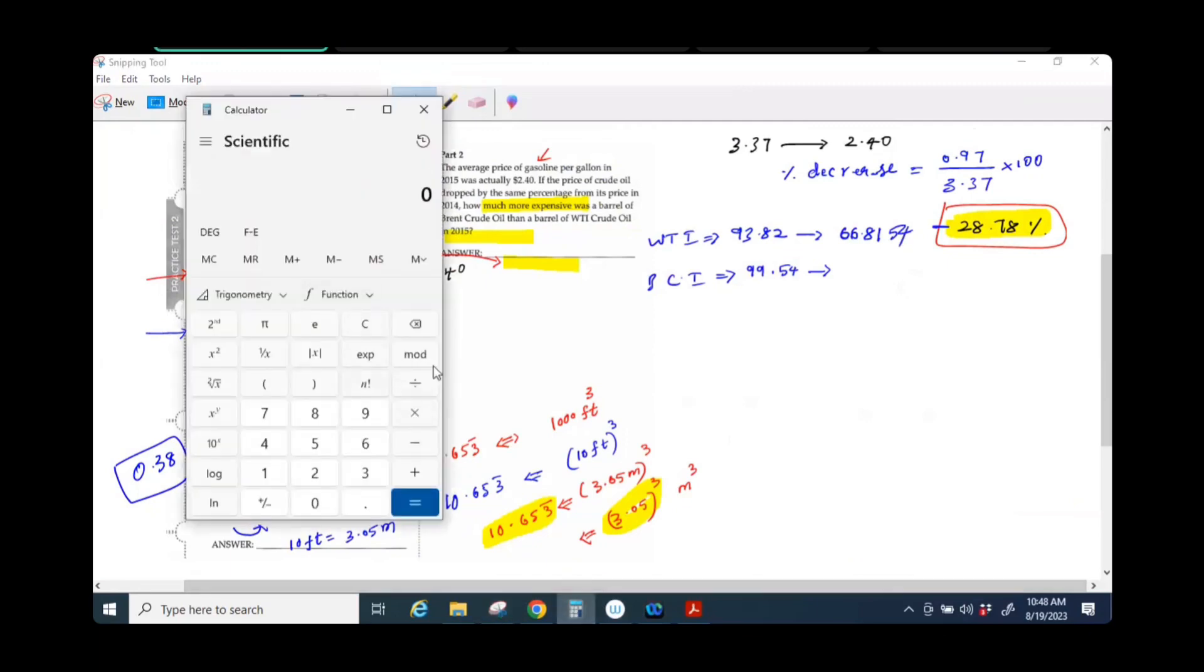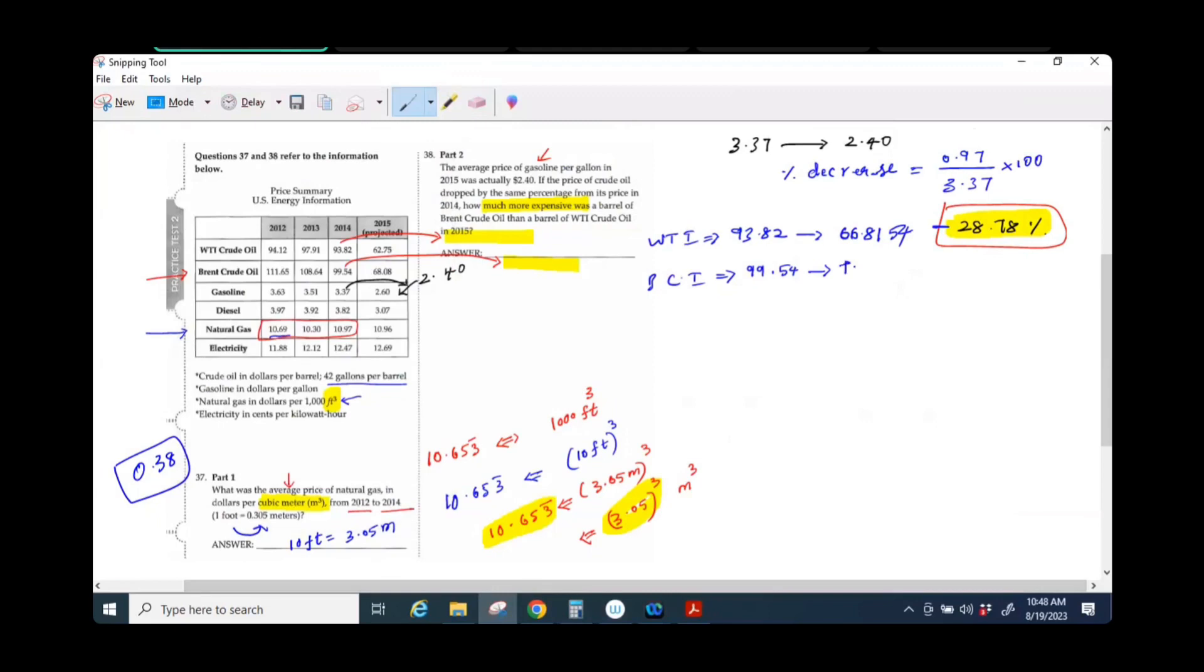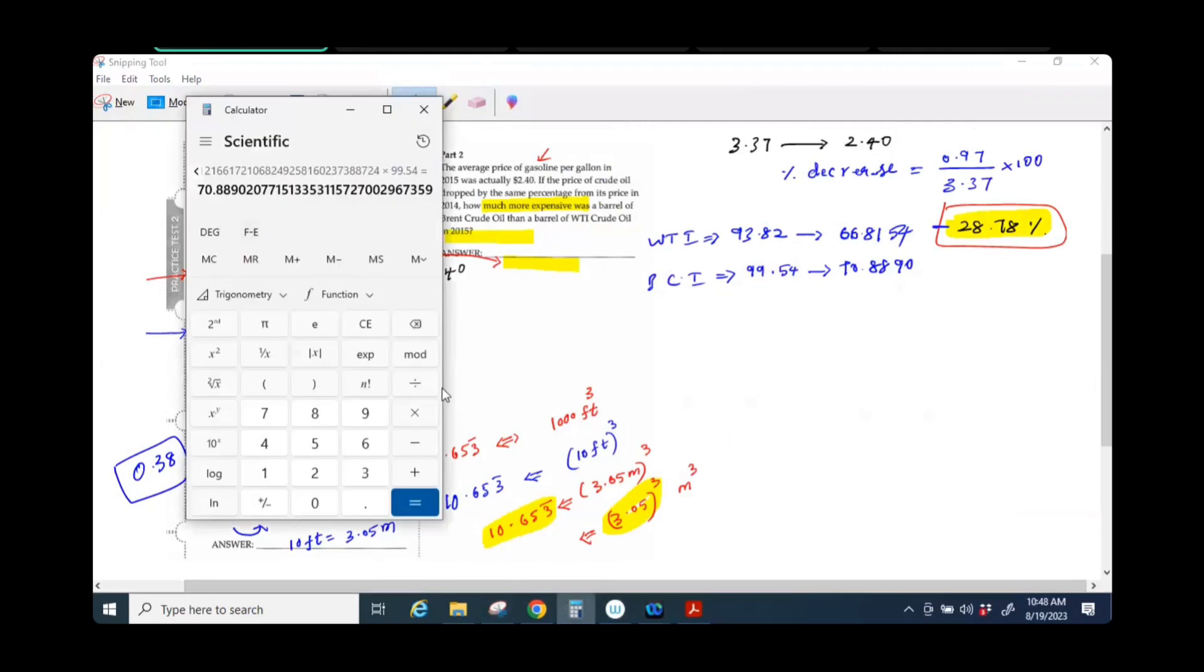And then again, I'm going to memory retrieve, multiply by the second one, $99.54. So what is it? $70.89. Is that making sense of what I'm doing? So I'm going to $70.89 minus $66.81. So there you go, $4.07. And since it's money, you can say $4.07.